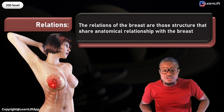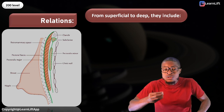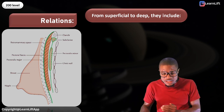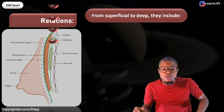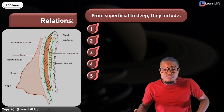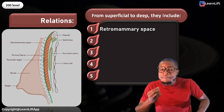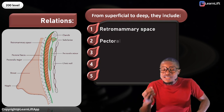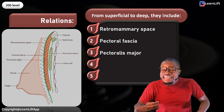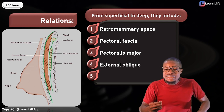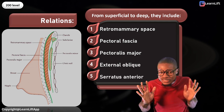What are those structures that share an anatomical relationship with the breast? We're going to look at them from superficial to deep. There are just five of them: number one is the retromammary space, number two is the pectoral fascia, number three is the pectoralis major, number four is the external oblique, and number five is the serratus anterior.